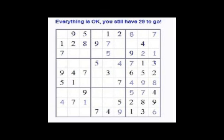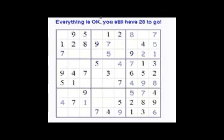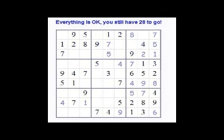Another example of eliminating possibilities is the solution to row 2, column 9. We know that row 2, column 9 must be a 5 because column 7 and column 8 already have 5s in them. That leaves us only with one possibility for row 2, column 9, which is a 5.